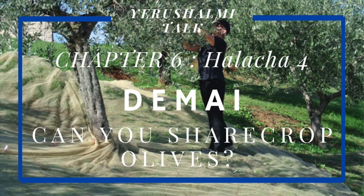The Gemara says if one leases as a sharecropper olive trees for oil — and again there's less work, he just has to pick, bring, and squeeze them — this is the law: just as the sharecropper and owner divide the Chulin portion of the oil between them, so too they divide the Truma portion of the oil between them. Even if the landowner is a Cohen, he cannot claim the Truma for himself. So if the agreement specifies an even division, tithes are also split evenly. If the landowner receives a third, the sharecropper does two-thirds, and the same percentages apply to the tithes.